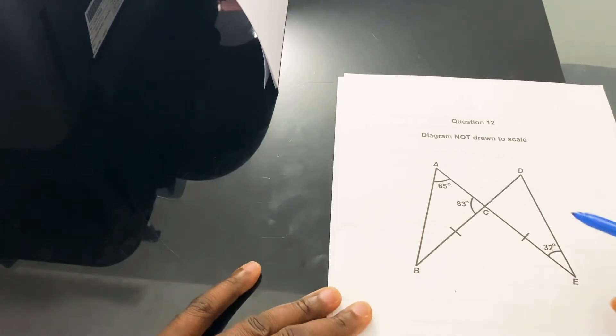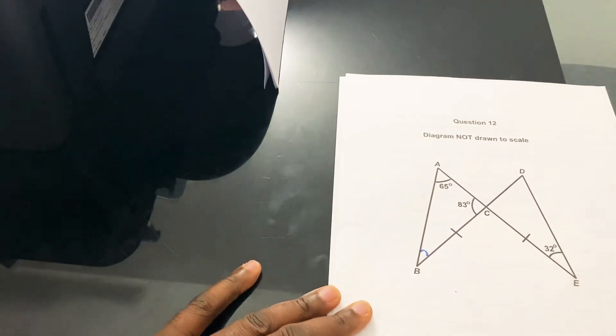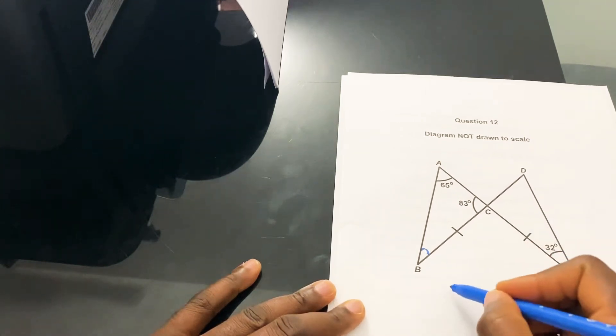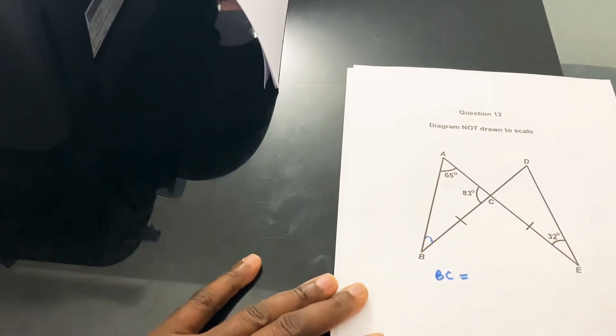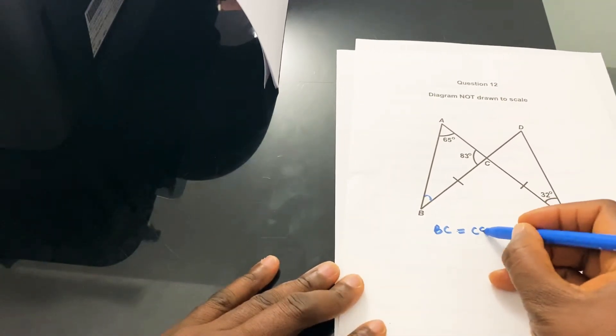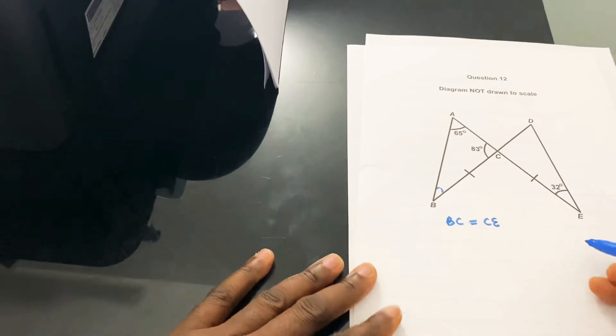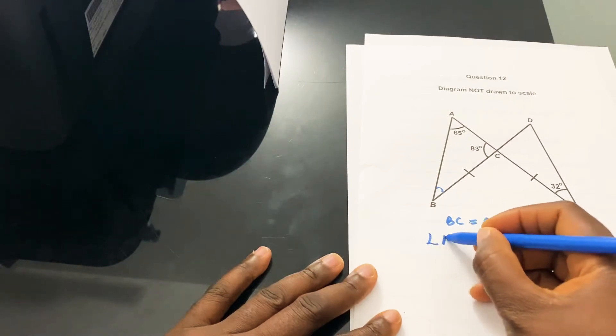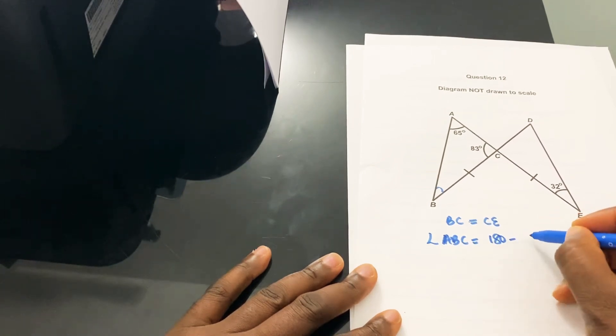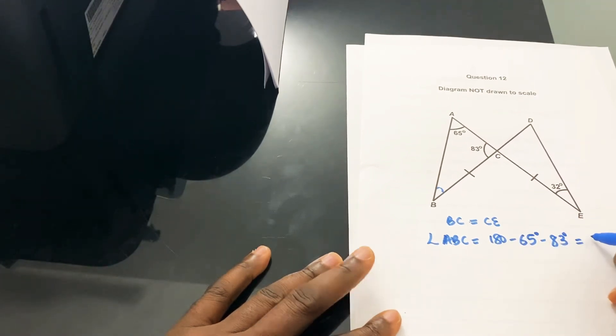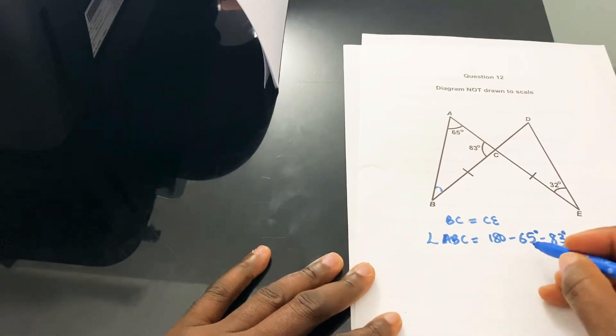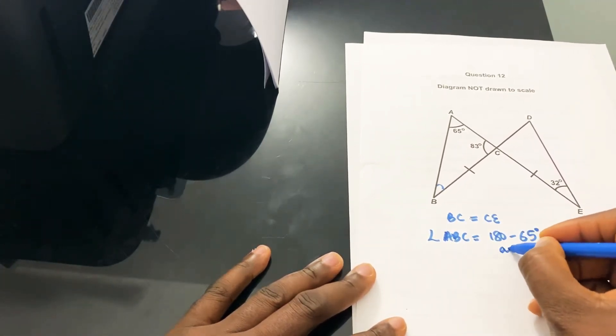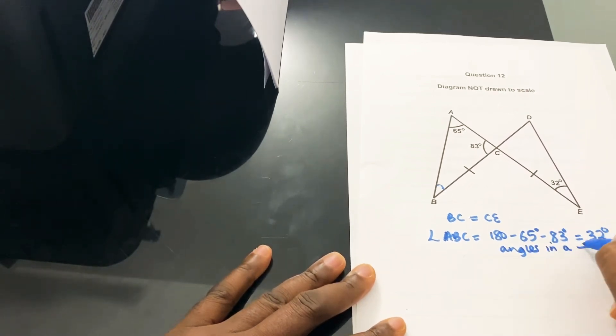So you can determine what the missing angle here is first of all. You know that BC is equal to CE. Angle ABC therefore would be equal to 180 minus 65 minus 83 degrees, and that's going to give you 32 degrees. You always have to write your reason: angles in a triangle.